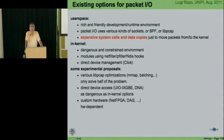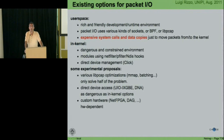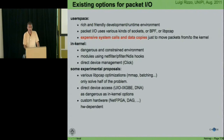What are the existing options for doing packet IO? From user space, you have access to many software libraries for traffic manipulation and logging, plus great development tools. The problem is that the mechanism to pass packets to the kernel is time-consuming — you generally need a system call for every packet or batch of packets, plus data copying. Once you're in the kernel, packets are encapsulated into descriptors allocated for each packet, which is also expensive.